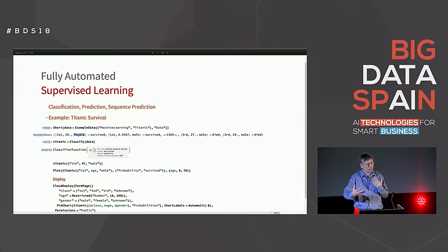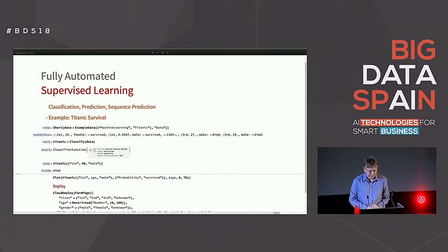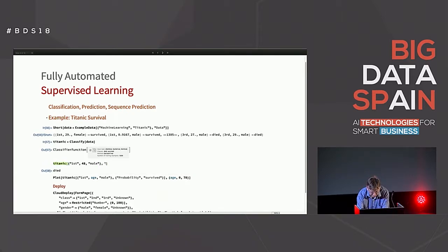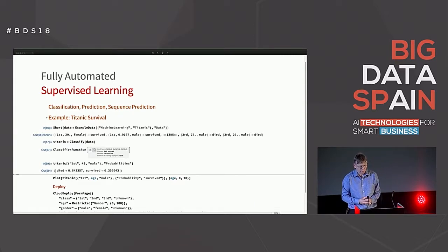The net result is I can now say — I had a birthday since I wrote this example — I'm 48 and male, I've traveled first class, and I would not have made it. We can drill into that model more deeply and say: what were my chances? By this model, I had a 64% chance of drowning.